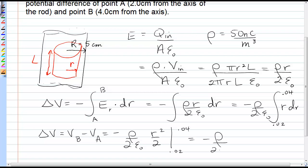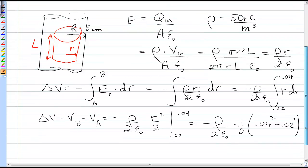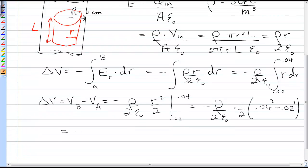So it's minus rho over 2 epsilon naught times a half of 0.04 squared minus 0.02 squared. And substituting all the numbers into that expression, we find that the change in voltage is negative 1.7 volts.